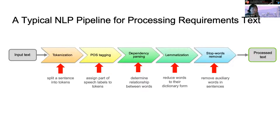NLP techniques are often used in combination in a pipeline fashion to perform specific tasks. There are many different NLP pipelines for processing requirements texts, but a typical one involves the input text undergoing tokenization, POS tagging, dependency parsing, lemmatization, and stopword removal, producing different information representations from the input.